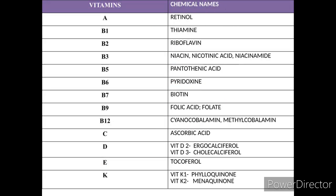Let us discuss vitamins and their chemical names. Vitamin A: retinol. Vitamin B1: thiamine. Vitamin B2: riboflavin. Vitamin B3: niacin (nicotinic acid, niacinamide). Vitamin B5: pantothenic acid. Vitamin B6: pyridoxine. Vitamin B7: biotin. Vitamin B9: folic acid. Vitamin B12: cyanocobalamin or methylcobalamin.